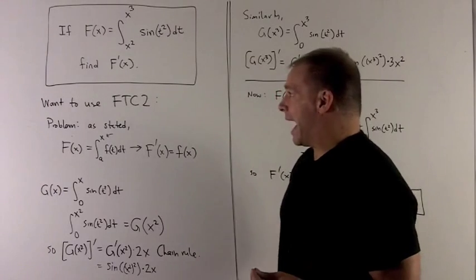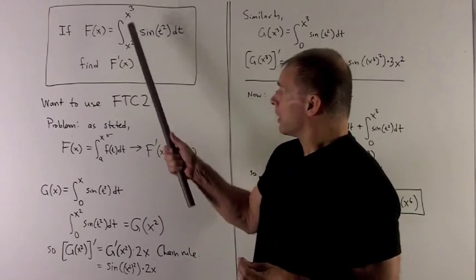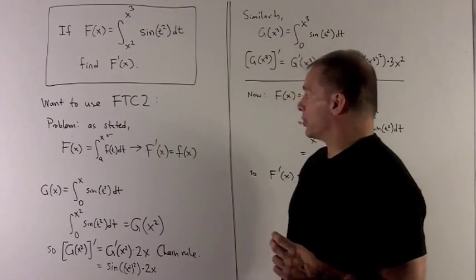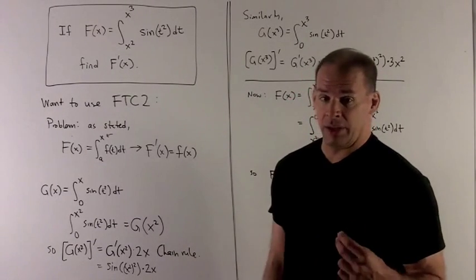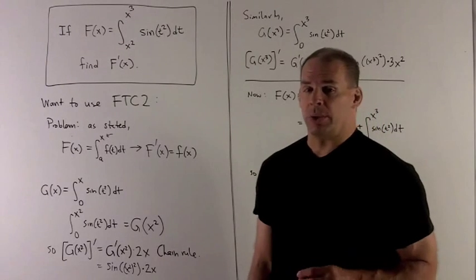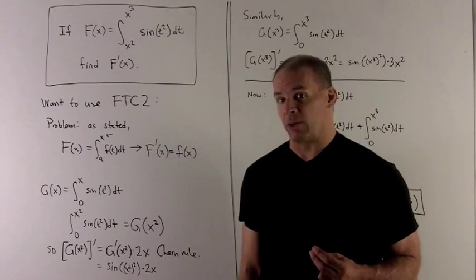Problem here, we're going to have the limits getting in the way because we don't have a constant at the bottom and we don't have plain old X in either of the slots. So we need to work our way around this using the chain rule.